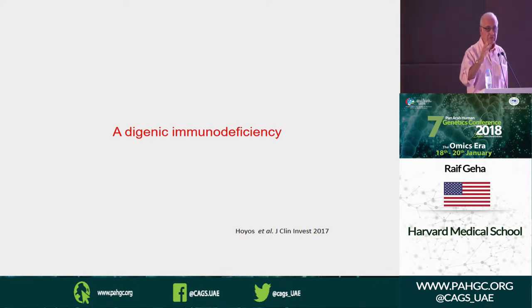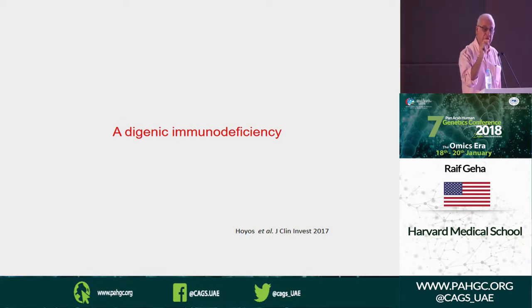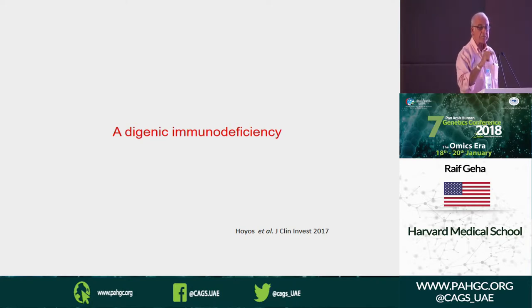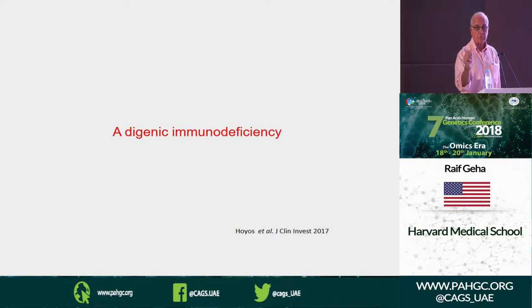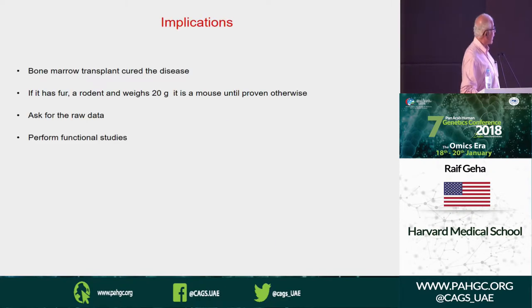She has a splice mutation — a point mutation in exon 19 that does not cause a coding change but creates a new non-canonical splice site. 95% of the time she splices wrong and is out of frame, which is why she only has about 5% of the normal protein level. We then performed a bone marrow transplant and cured her. Moral of the story: ask for the raw data if it looks like a mouse but isn't being reported as one, and perform functional studies.